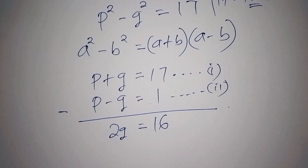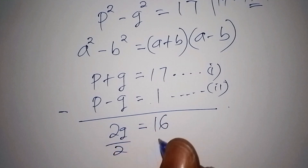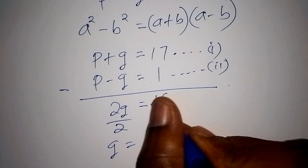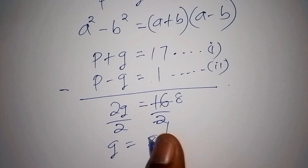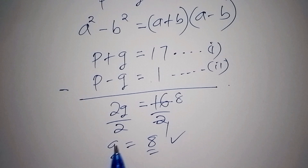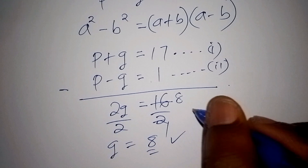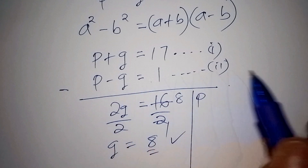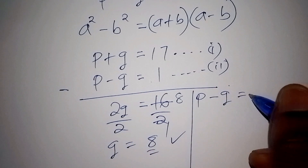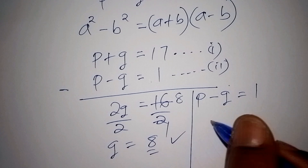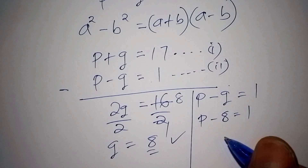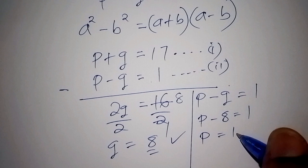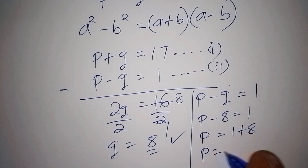We solve for q by dividing both sides by 2, so q equals 16 divided by 2, which is 8. Now to find p, we use the second equation: p minus q equals 1. We already know q is 8, so p minus 8 equals 1. Moving the 8 across gives us p equals 9.